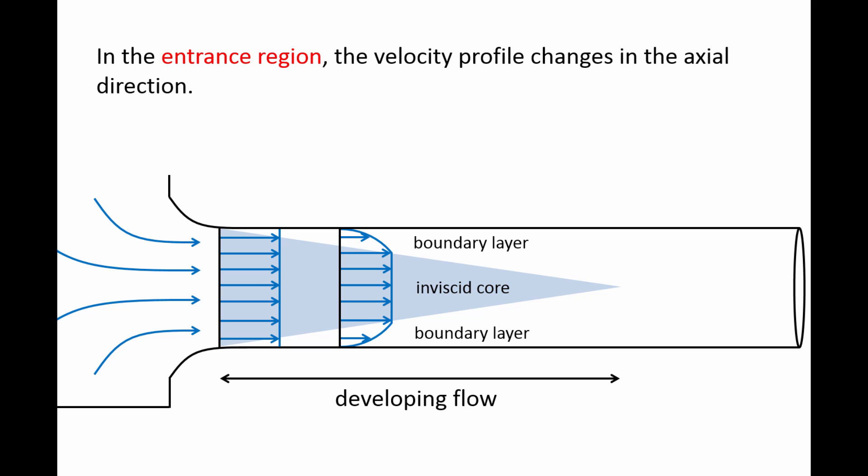As the flow continues through the entrance region, the velocity profile changes in the axial direction, and the flow is said to be developing. At the end of the entrance region, the boundary layer has grown to encompass the entire flow. Shear stress exists throughout the entire velocity profile, and the flow is now said to be fully developed.